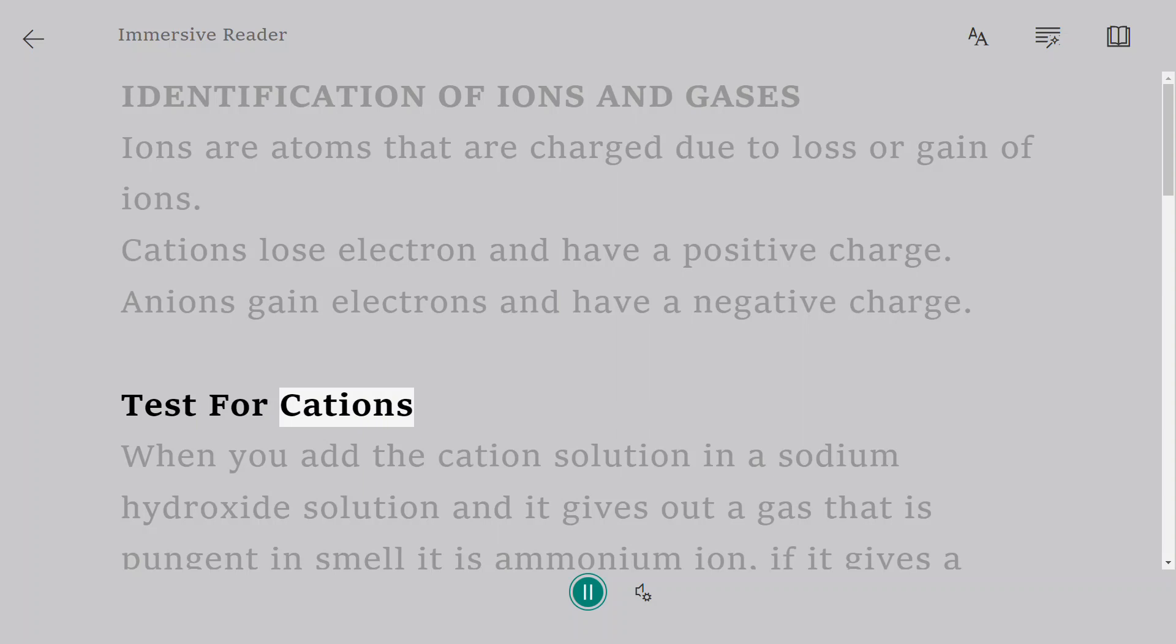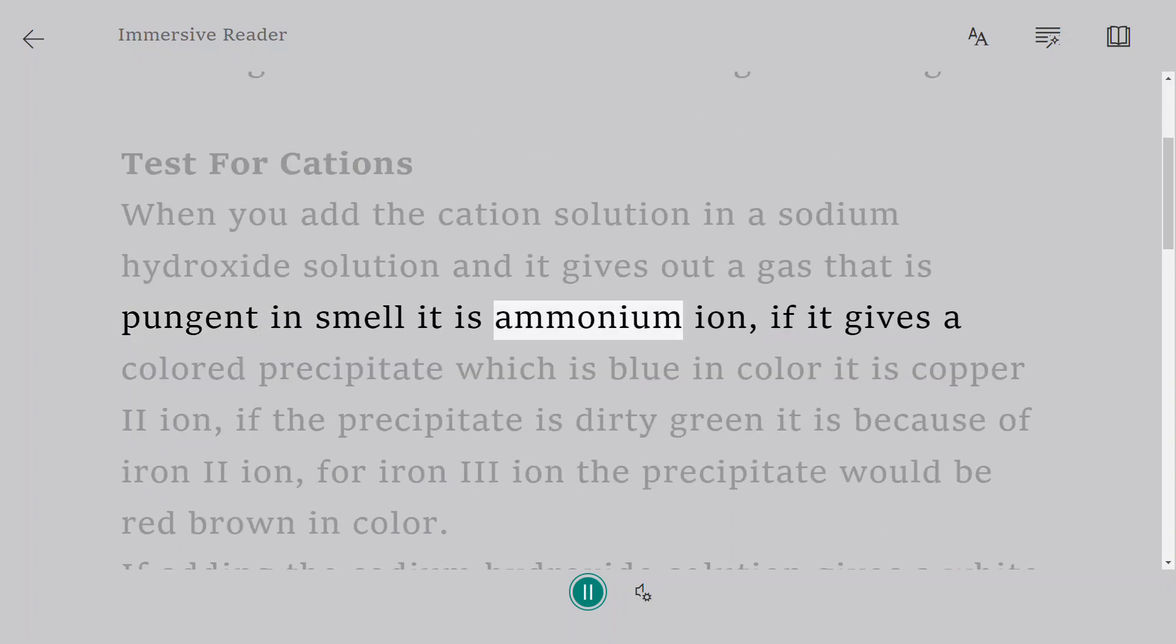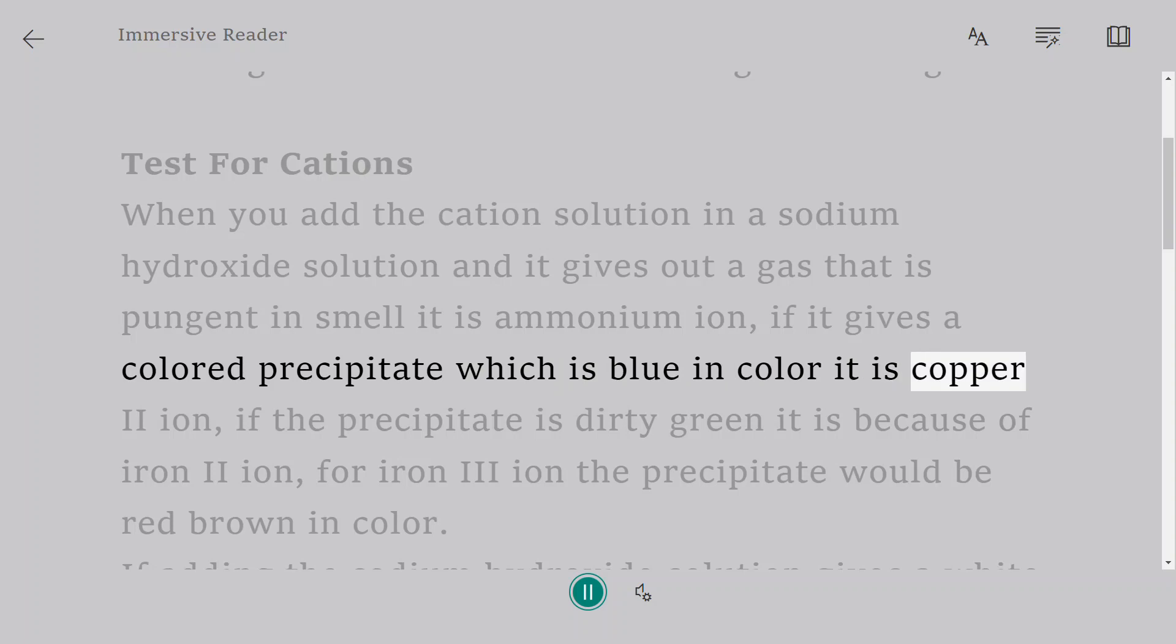Test for cations. When you add the cation solution in a sodium hydroxide solution and it gives out a gas that is pungent in smell, it is ammonium ion. If it gives a colored precipitate which is blue in color, it is copper II ion. If the precipitate is dirty green, it is because of iron II ion. For iron III ion, the precipitate would be red brown in color.